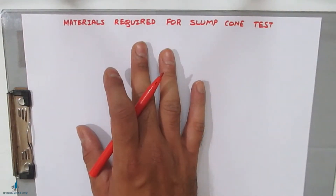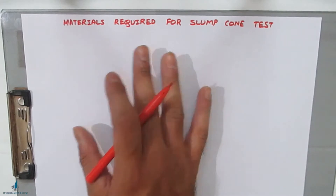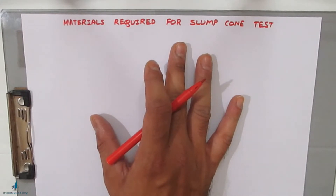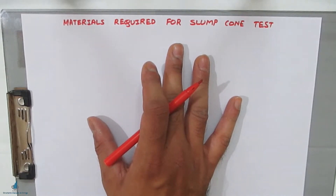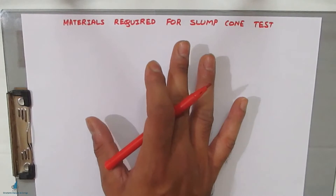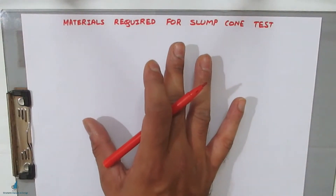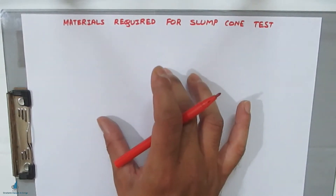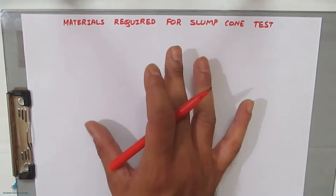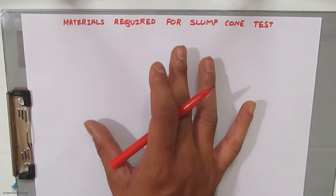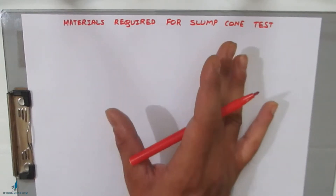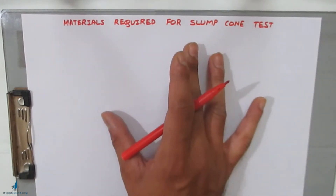Hello friends, welcome back to All About Structural Analysis and Design. In this particular video, I will be showing you how to calculate the materials required for slump cone test. Slump cone test is performed to check the workability of fresh concrete. The detailed procedure for conducting the slump cone test will be coming up in the next video. I will be showing the same quantities in a practical demonstration of how the slump cone test is done in the lab and on site.